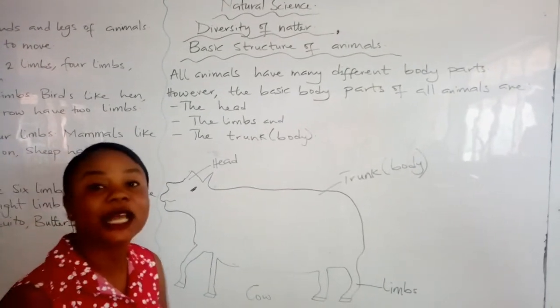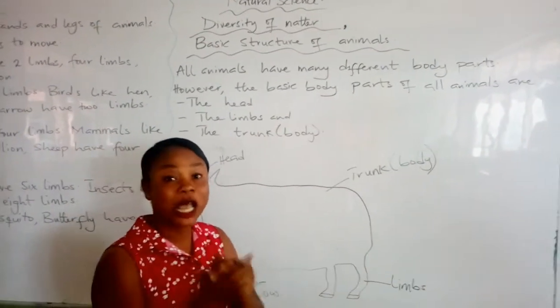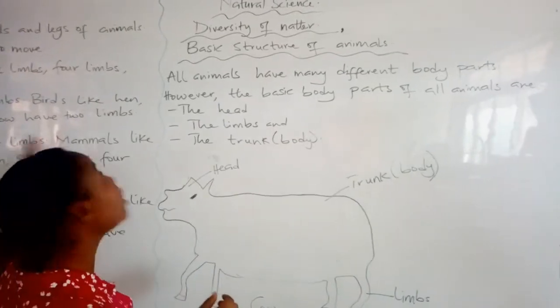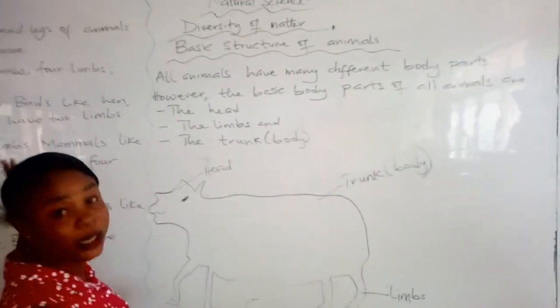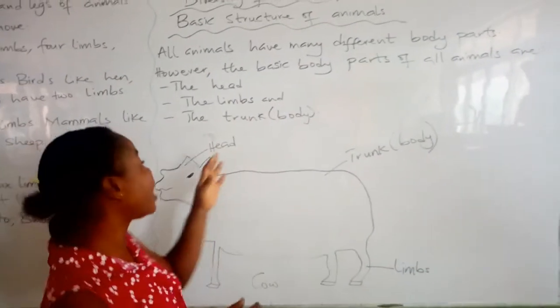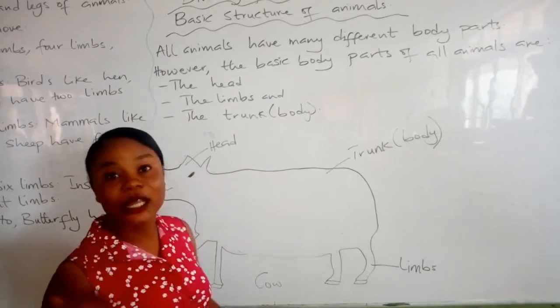The limbs are the hands and the legs of animals. But today we are only going to talk about the limbs. We'll be talking about the trunk and the head in the other lesson.